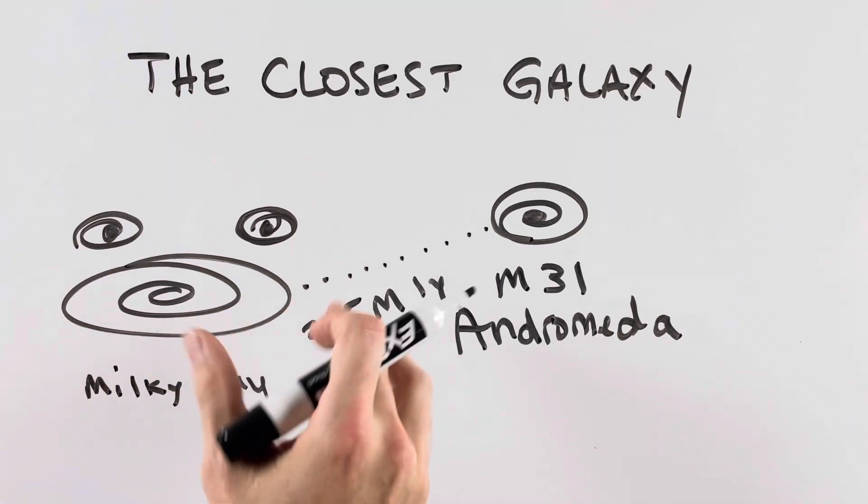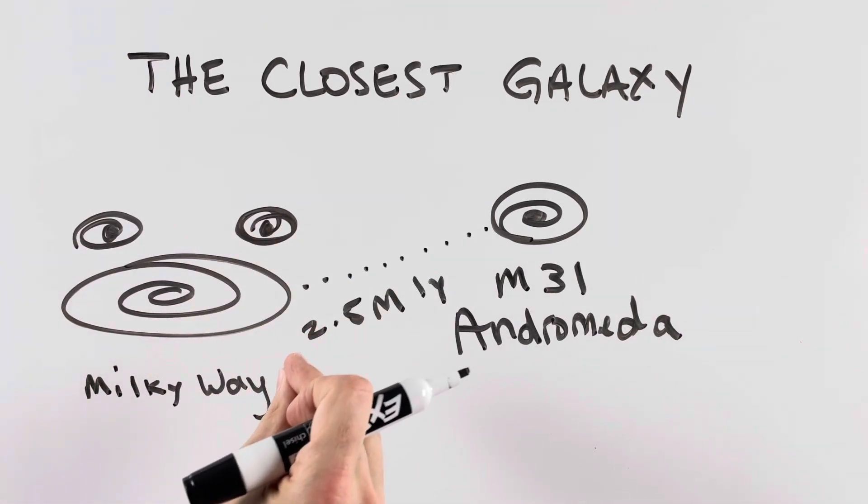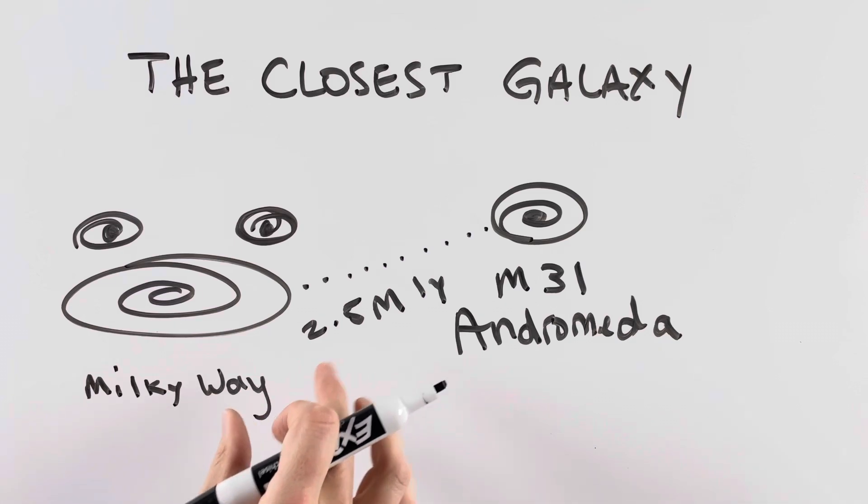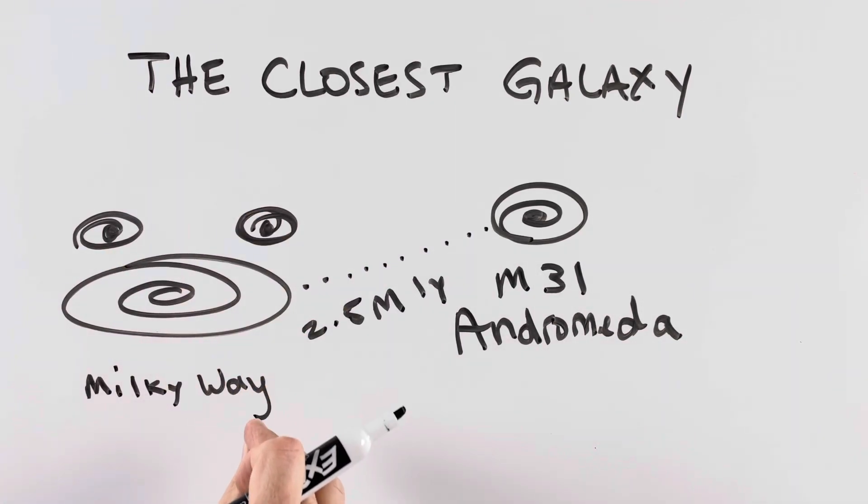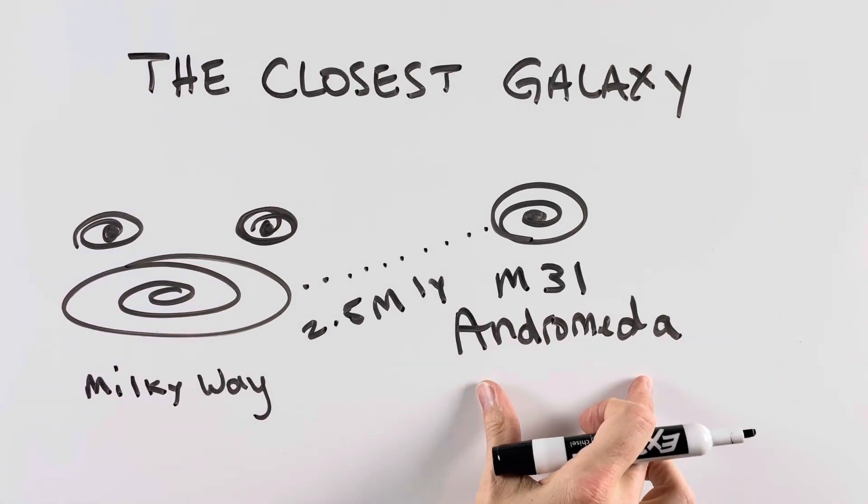You can say maybe it's even debatable if a clump of stars is really a dwarf galaxy or if it's just a clump of stars around the outside rim of the Milky Way. So technically, Andromeda is the closest galaxy.